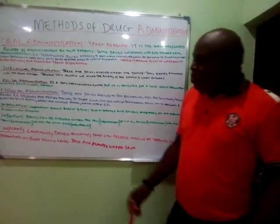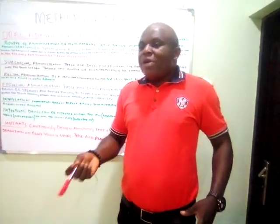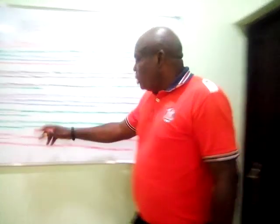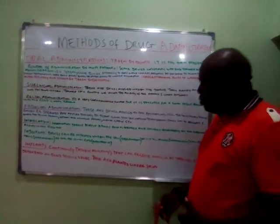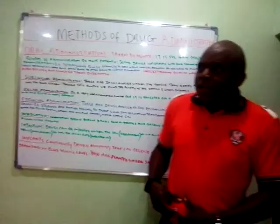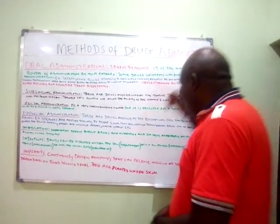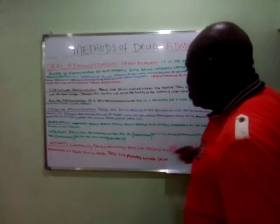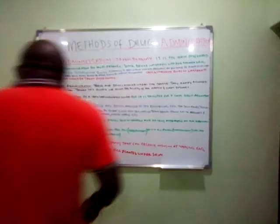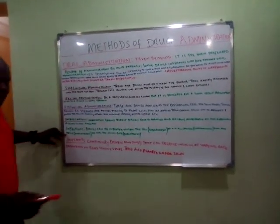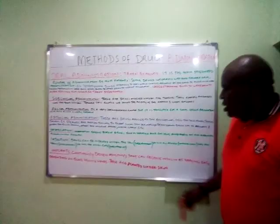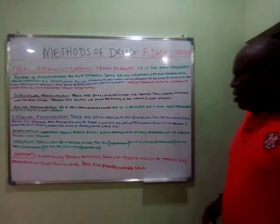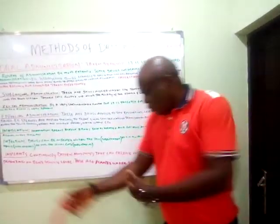Some people prefer injection because they find it difficult to swallow drugs. Drugs can be injected subcutaneously — under the skin — which is used for diabetics, for example. Then there is intramuscular injection, delivered into the muscle such as the buttocks. We also have intravenous injection through the vein, and some drugs are delivered to the spinal cord as well.